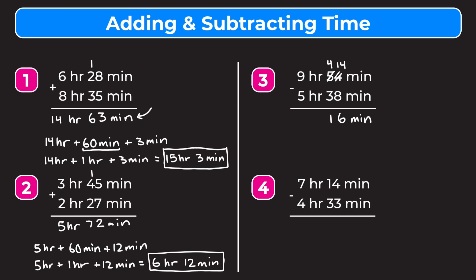Now we subtract the hours: 9 minus 5 gives us 4 hours. So our final answer is 4 hours and 16 minutes.